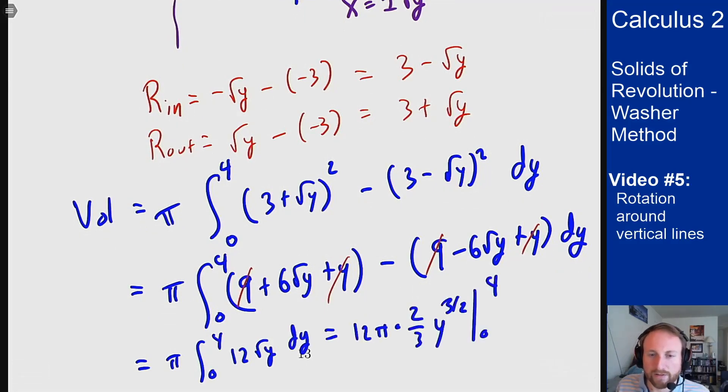And when I plug in 4, the y to the three halves becomes an 8. This cancels to become a 4, so I get an 8 times an 8, which is going to be a 64 pi. So that's the volume of that solid.